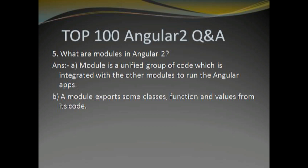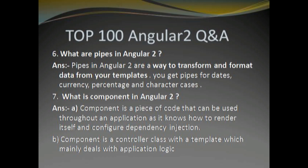Next question: what are modules in Angular 2? A module is a unified group of code which is integrated with other modules to run Angular apps. A module exports some classes, functions, and values from its code. Next: what are pipes in Angular 2? Pipes are a way to transform and format data from your template — you get pipes for dates, currencies, percentages, and character cases.